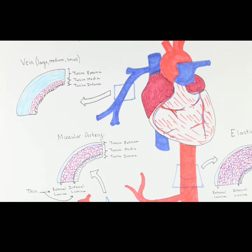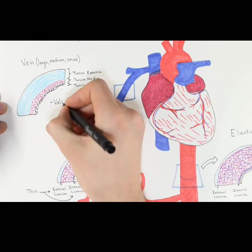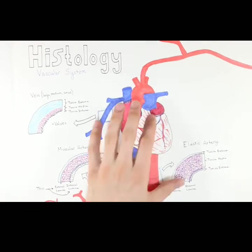Since veins are relatively inelastic and experience low blood pressure, an important feature that veins have to help return blood to the heart are valves. These valves prevent backflow of blood and are specific to veins. No other vasculature in the body other than the heart has valves.